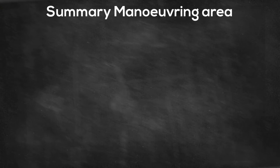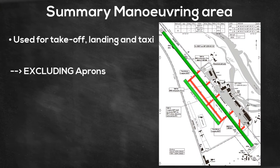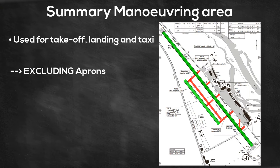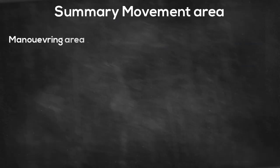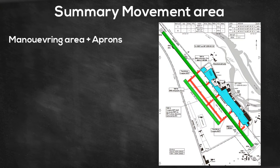The maneuvering area is the part of an aerodrome used for aircraft operations excluding the aprons, while the movement area, as the name says, is used for the movement of aircraft including the aprons.